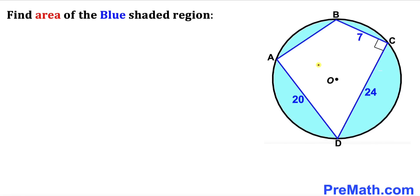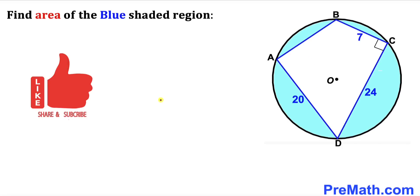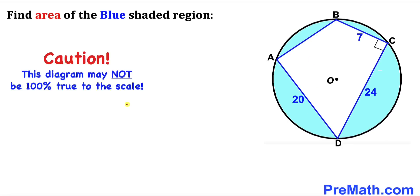Welcome to Premath. In this video we have a cyclic quadrilateral ABCD inside a circle, such that the side lengths of this quadrilateral are 7, 24, and 20 units. O is the center of this circle, and we are going to calculate the area of the blue shaded region. Please don't forget to give a thumbs up and subscribe. Note that this figure may not be 100% to scale.